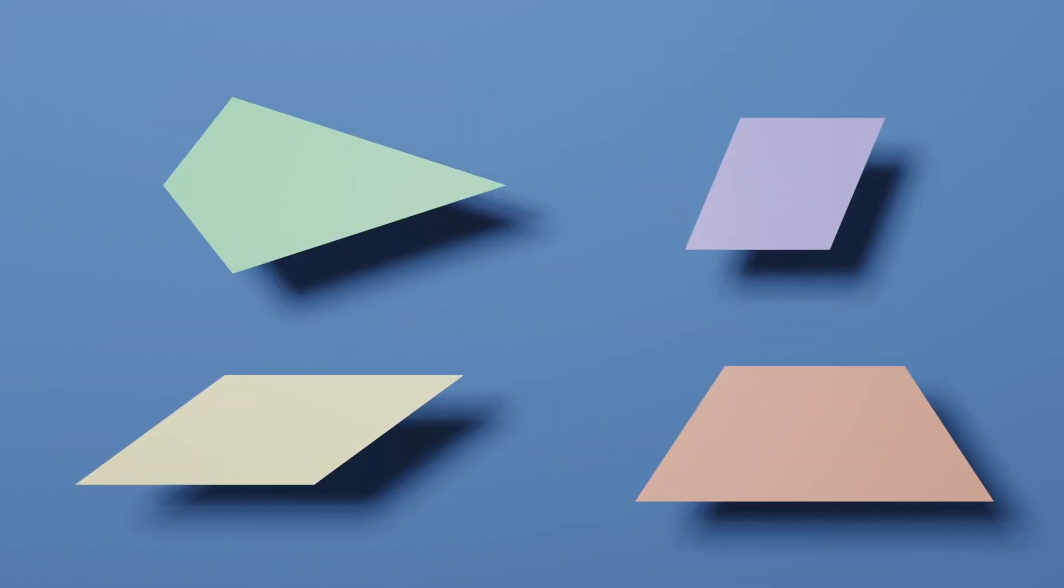Our last unit covered unique quadrilaterals, which were special four-sided shapes. The entirety of this unit will focus on the circle, a geometric shape without sides. The circle has some important properties that are related to many other subjects in math.